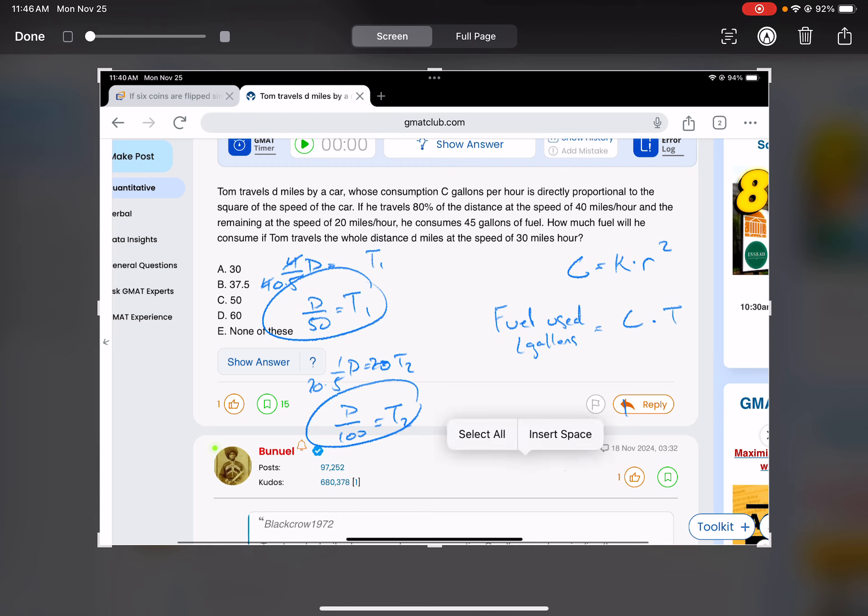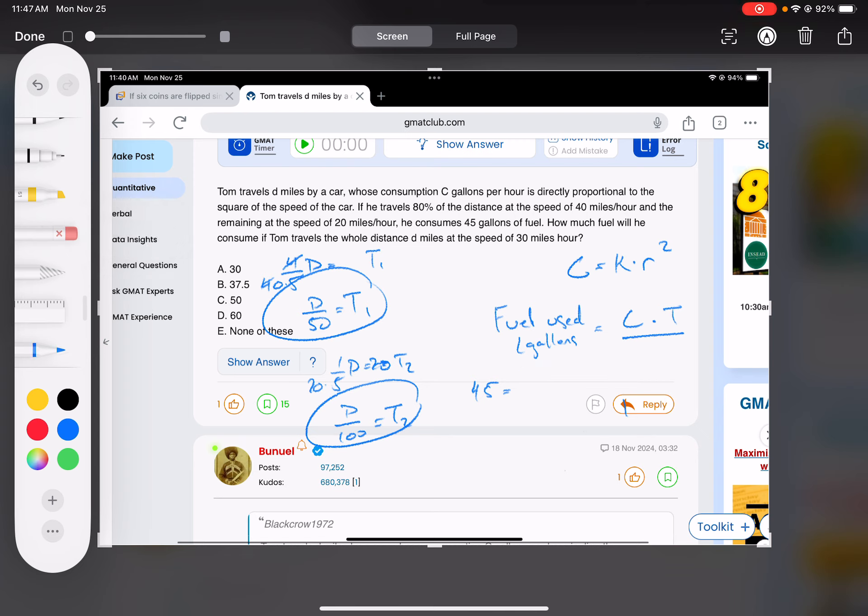Now they tell me they used, after they did all this, they used 45 gallons of fuel. So the fuel used of 45 gallons, that should equal the rate times the time plus the rate times time for each leg of the journey. So that's going to be k times, the C part of it for the first leg is k times the rate was 40 squared, then that times the time which I got was d over 50. Then that plus the second leg is going to be the constant k that we don't know times the rate squared, which was 20 squared times the time. Notice I'm putting together this C here is k times r squared. That's k times r squared times the time I got, which is d over 100.